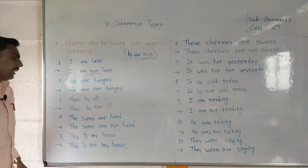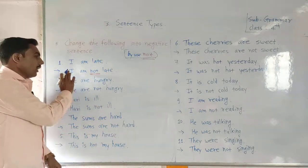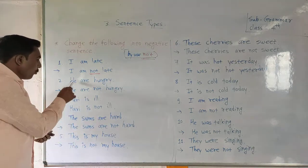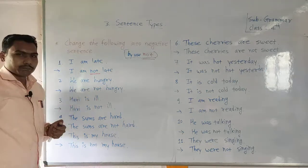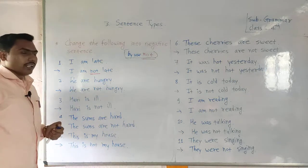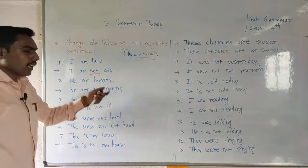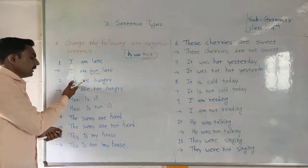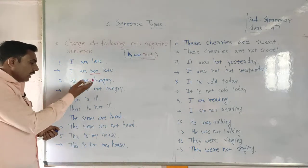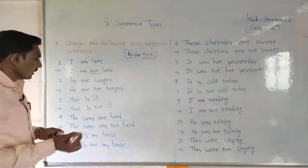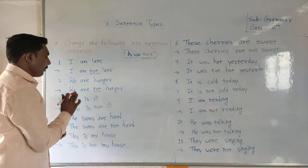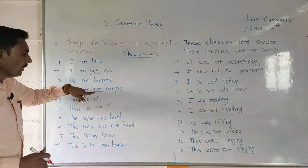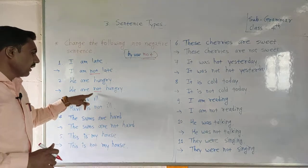The second example is: 'We are hungry.' Full stop. The answer is: 'We are not hungry.' Subject, helping verb, negative word — 'not' — then the rest of the sentence.